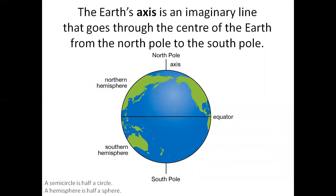A semicircle is half a circle. A hemisphere is half a sphere. The half a sphere closest to the North Pole is called the Northern Hemisphere. The equator is an imaginary circle around the Earth.